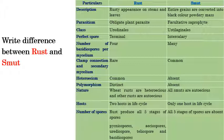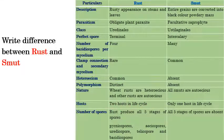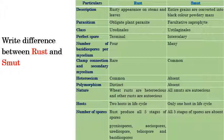Regarding nature: almost all rusts are heteroecious, though a few are also reported to be autoecious. All smuts are autoecious only. Regarding hosts: two hosts are involved in the life cycle of rust — for example, in wheat stem rust, the main host is wheat and the alternate host is barberry — whereas in smut only one host is involved. Rust produces five spore stages: pycniospores, aeciospores, uredospores, teliospores, and basidiospores, whereas these multiple stages are absent in smut. These are the general differences between rust and smut.